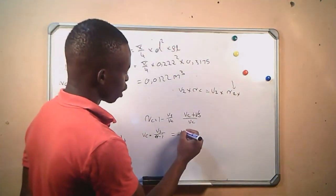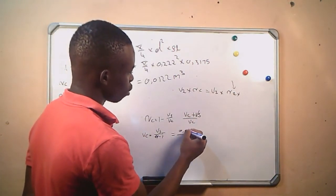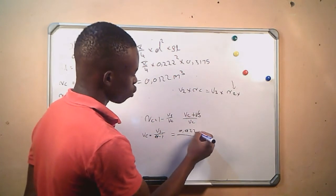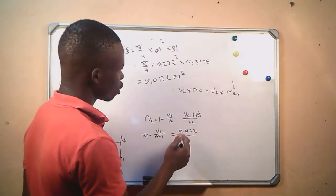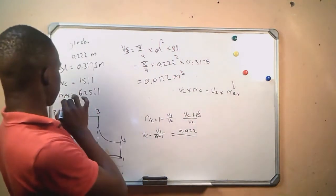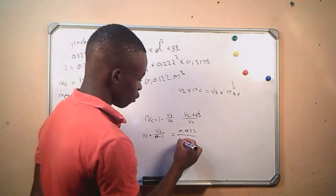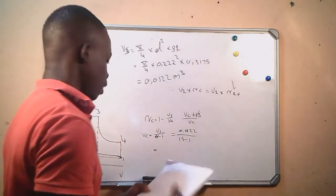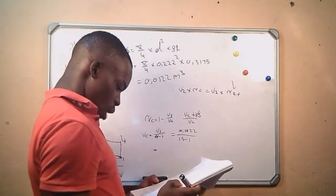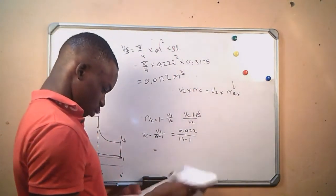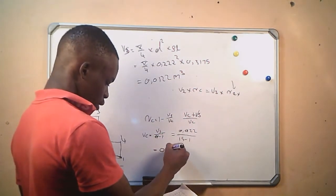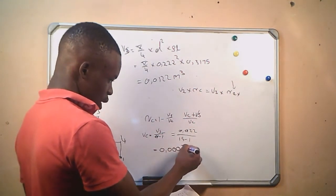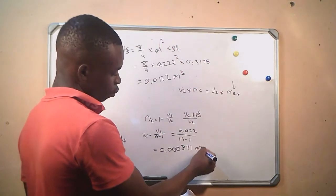Our swept volume is 0.0122 cubic meters. Our compression ratio is 15, so we calculate 0.0122 divided by (15 - 1). From this, we get that our clearance volume equals 0.000871 cubic meters.